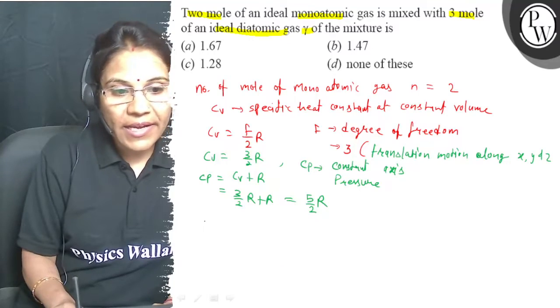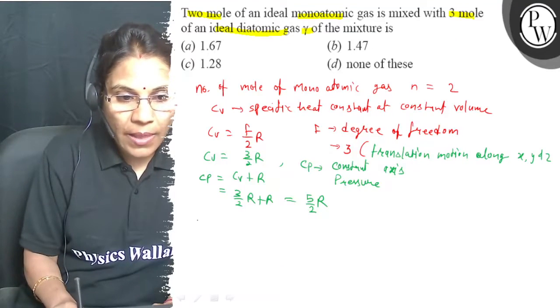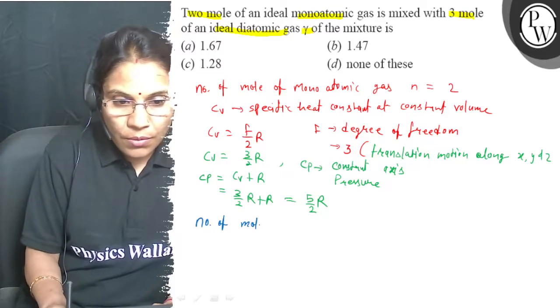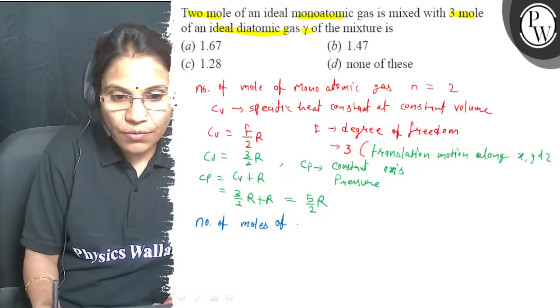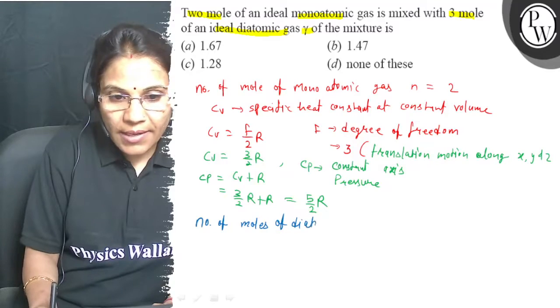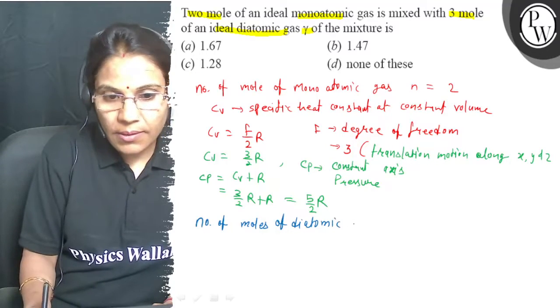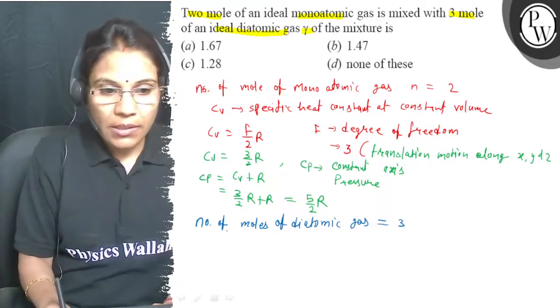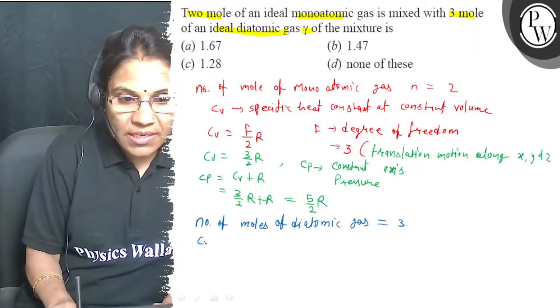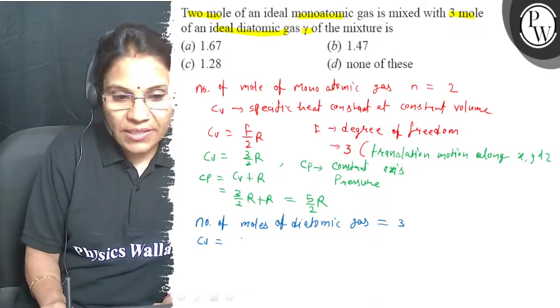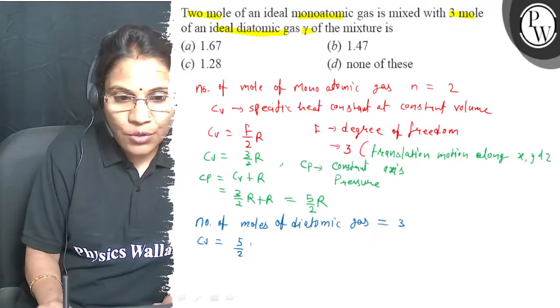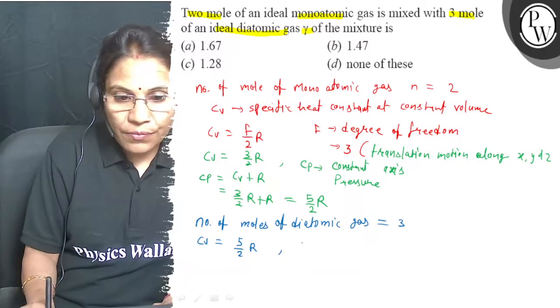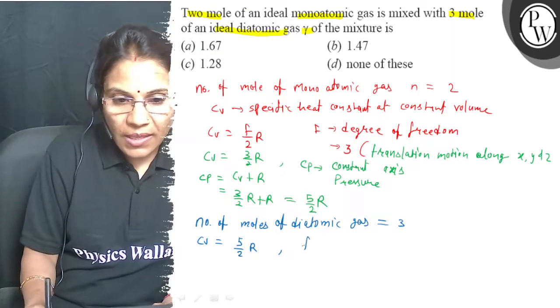Now, diatomic gas, number of moles of diatomic gas are equal to 3 and cv value for this is 5/2 R. Degree of freedom f.